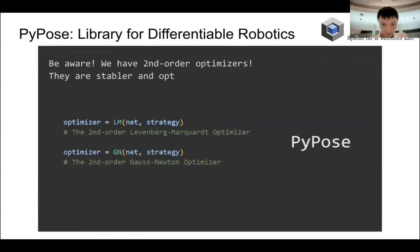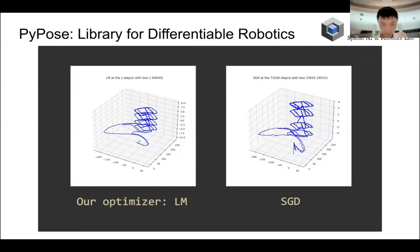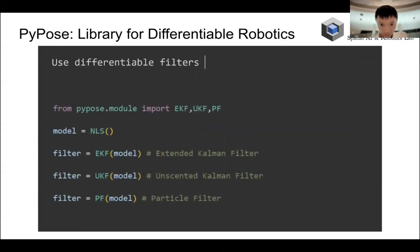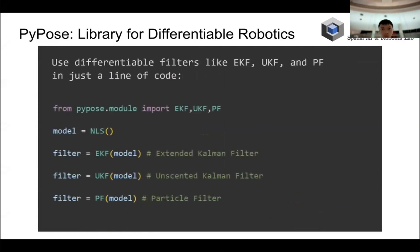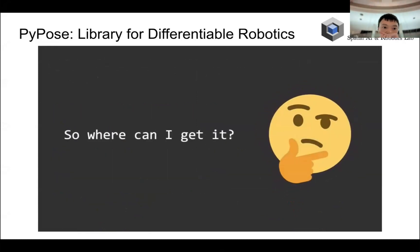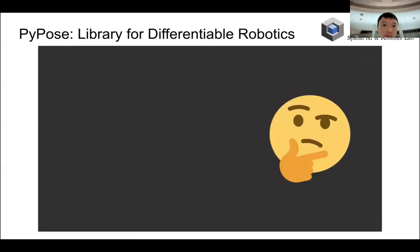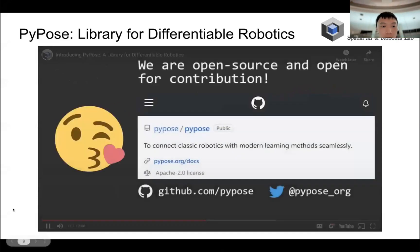We also have second-order optimizers, which are faster and more stable. Compared to PyTorch's first-order optimizer, our Levenberg-Marquardt second-order optimizer converges in fewer steps with lower loss. You can also use differentiable filters like EKF, UKF, and a particle filter in just one line of code. PyPose is available via pip install PyPose. We are open source and open for contribution — add features if you want to, and you are welcome to join our community.